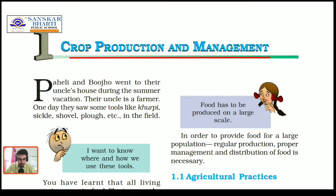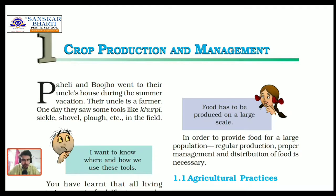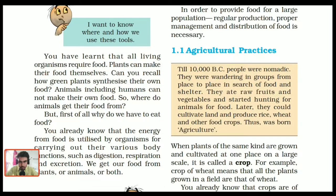We have learned that all living organisms require food to survive. We also know plants can prepare their own food and hence are known as autotrophs. But do you know how green plants synthesize their food? Yes, of course, photosynthesis — the process conducted by green plants in the presence of sunlight and chlorophyll.